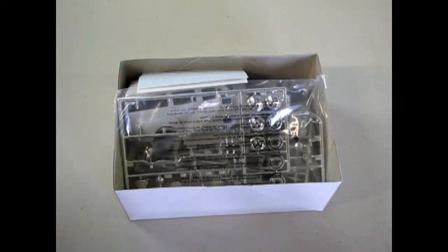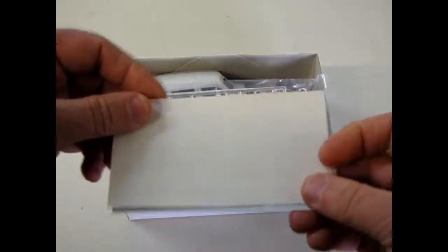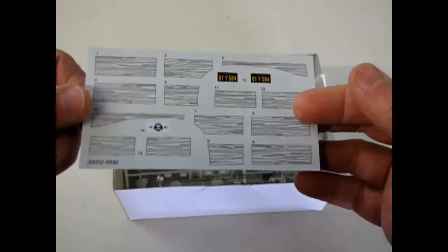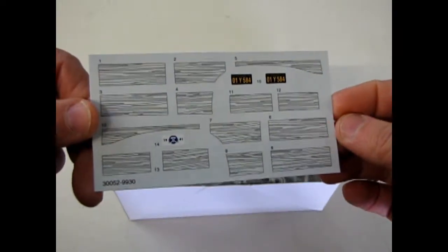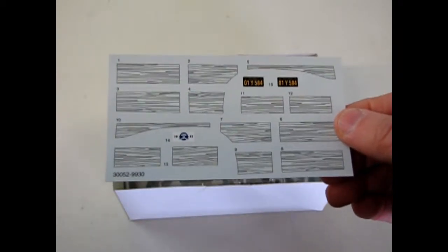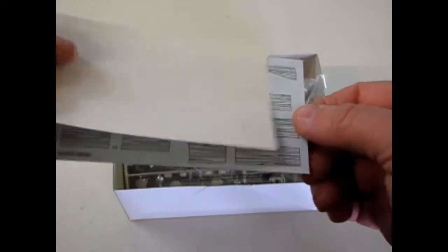But before we do that, we're gonna look at our decal sheet which gives you the nice wood grain paneling, so you don't even have to try to attempt to make wood grain on this. You just paint it brown inside and then put your decals over the top, so pretty cool.